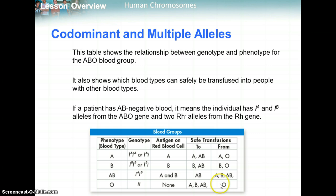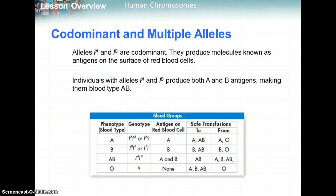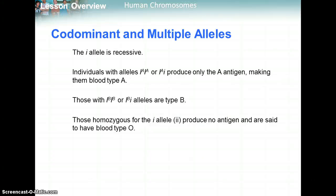Type O has both anti-A and anti-B antibodies, which is why they can only receive blood from type O. Type AB people have no antibodies, so they can receive blood from almost everyone. If you're type AB, you have both the A and B alleles. If you're little i, little i, you're type O. If you're type B, you can be I-B I-B (homozygous) or heterozygous I-B little i.